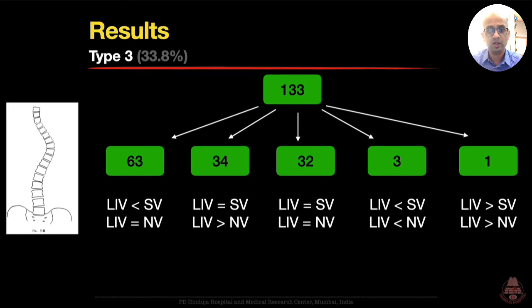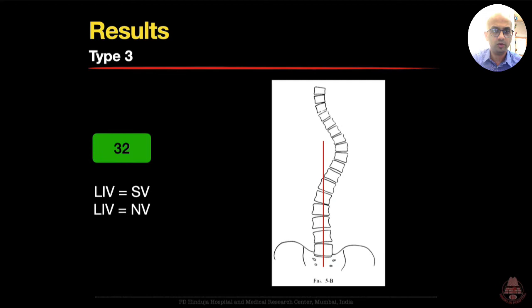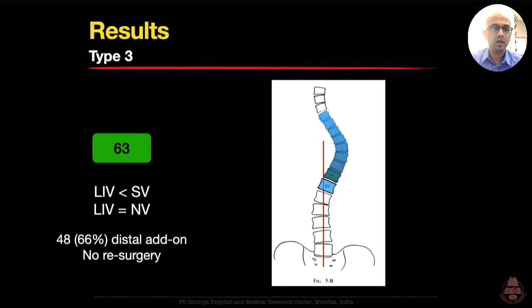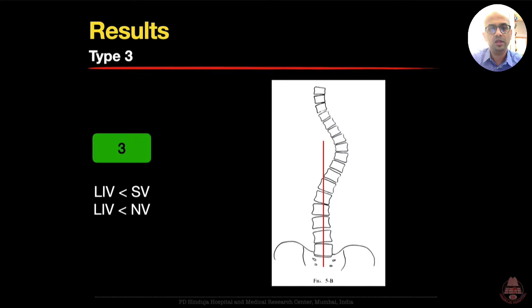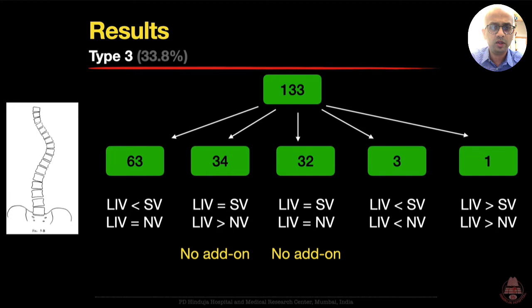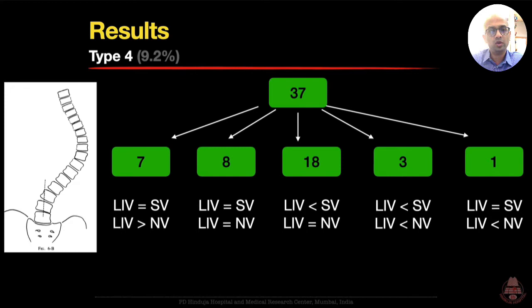For the Type 3 curve pattern — the main thoracic curve, equivalent to Lenke 1A — 33% of patients, 133 patients, were divided into five subgroups. In 32 patients where the LIV was the stable and neutral vertebra, there was no progression. In 34 patients where the LIV was the stable vertebra and a little beyond the neutral vertebra, again no progression. In 63% of patients where the LIV stopped short of the stable vertebra but was the neutral vertebra, 66% had a distal add-on but no re-surgery. Three patients had the LIV stop short of both stable and neutral vertebra — one had a distal add-on, no revision. Overall, if the LIV was the stable vertebra, there was no distal add-on.